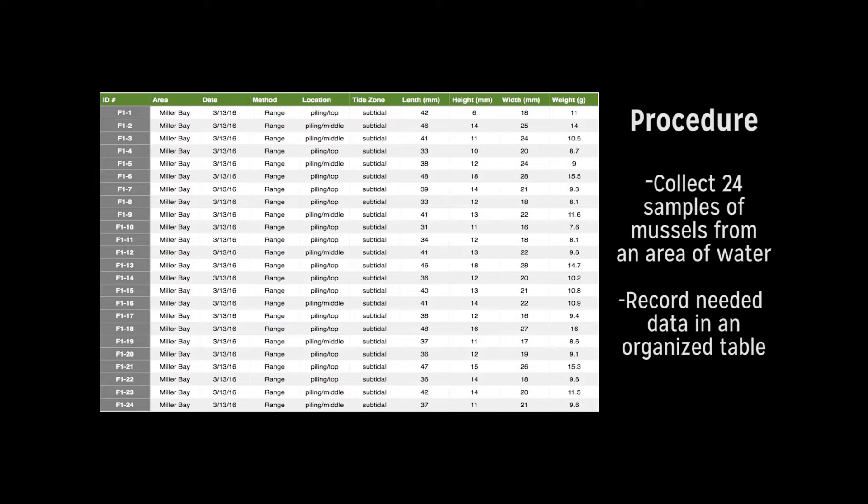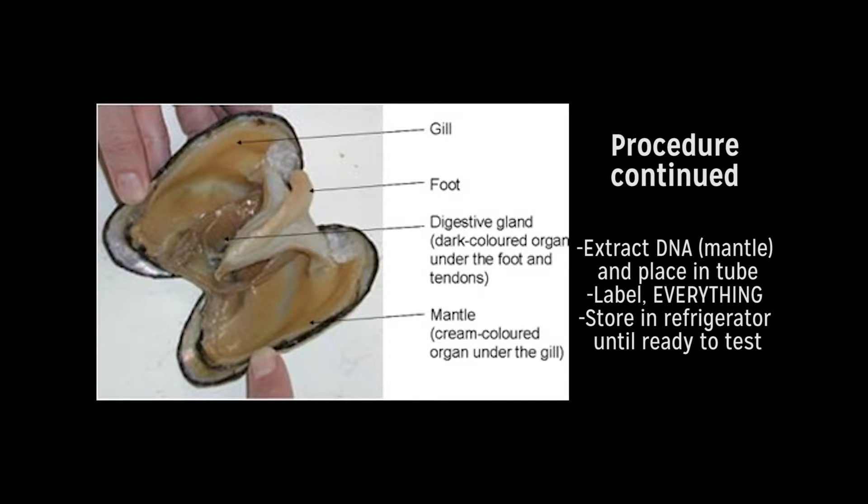After the experiment, we were able to identify the species. In order to extract DNA from the mussel, you need to have a scalpel or other sharp tool. You can see the mantle labeled in the picture. This is the section of the mussel we cut out. They were approximately three millimeters in length, which provides enough DNA to test.